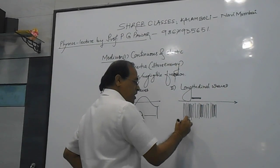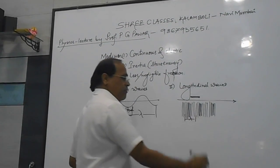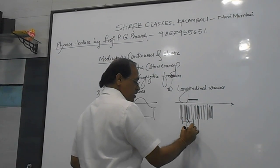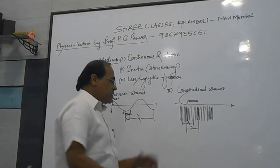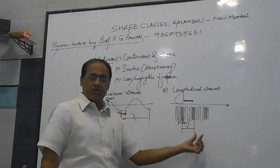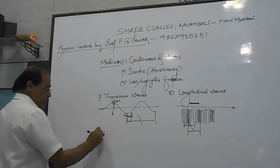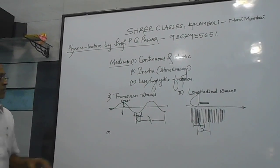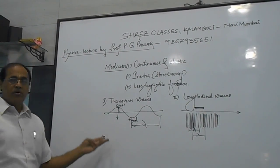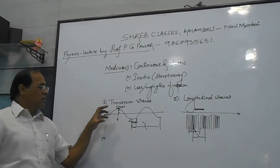Similarly, in a longitudinal wave, from the center of one compression to the center of the next compression, that distance is also called the wavelength of the wave. Additionally, when a wave travels, it has equal amplitude, period, and frequency for all particles.